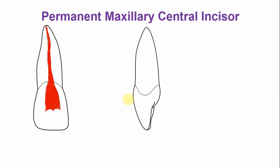From the labial-lingual section, the pulp chamber tapers towards the incisal area. The remaining pulp chamber follows the outline of the crown. There is a constriction at the cervical area, and there is a single pulp canal.